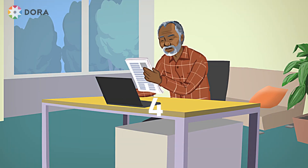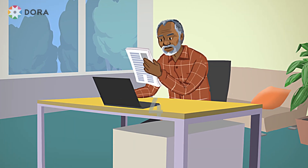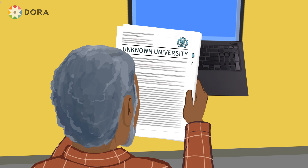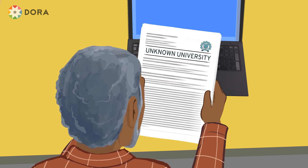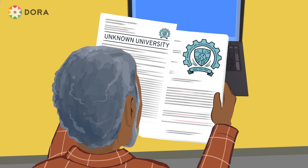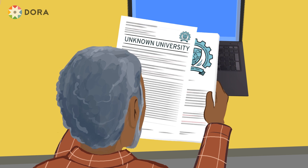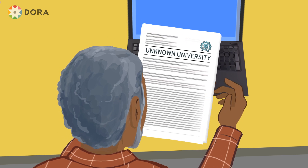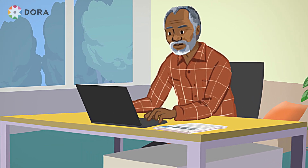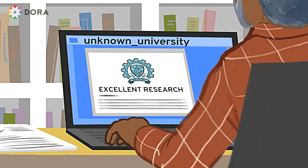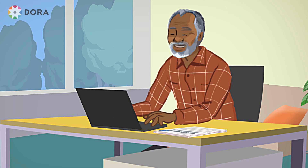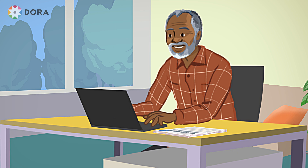Fourth, be aware of unintended biases that arise from scientific and cultural stereotypes, such as gender, ethnicity, seniority, affiliation and discipline. These biases can be found in everyone and are held even by the most egalitarian researchers. Slow down, be vigilant and check for evidence.